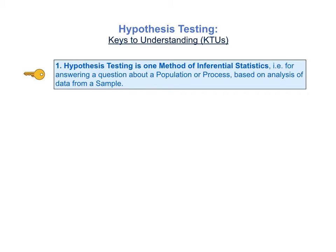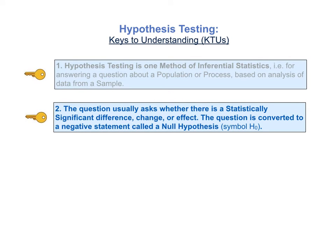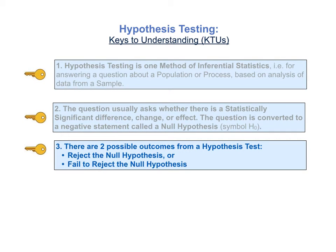Key to understanding number one is: hypothesis testing is one method of inferential statistics, that is, for answering a question about a population or process based on analysis of data from a sample. The second KTU is: the question usually asks whether there is a statistically significant difference, change, or effect. The question is converted to a negative statement called a null hypothesis, symbol H sub 0. The third key to understanding is: there are two possible outcomes from a hypothesis test — either reject the null hypothesis, or fail to reject the null hypothesis.